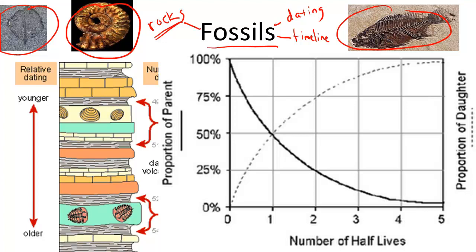So how do paleontologists use dating techniques to determine the age of fossils? Two ways we are going to describe here. Scientists use relative dating, meaning they determine the age of rocks in relation to others through the Law of Superposition.